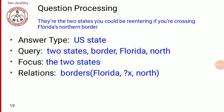For example, consider the question: 'There are two states you could be re-entering if you are crossing Florida's northern border.' Breaking this down: the answer type is 'US state.' The query keywords are 'two states,' 'border,' 'Florida,' 'north.' The focus is 'the two states.' The relation is Florida with some other state to the north, related by border — what are the border states related to Florida in the north.